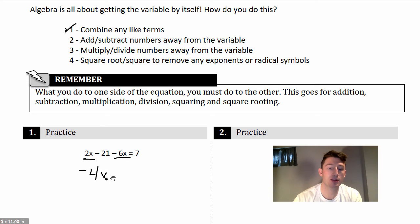So now Step 2, add or subtract numbers away from the variable. There's a negative 21 here next to the x. Since it's negative 21, I'll do the opposite: I'll add 21. Add 21. So now we get negative 4x equals 28.